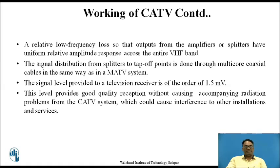The output of the tilt controller gives a relatively low frequency loss so that the output from the amplifiers or splitters has uniform relative amplitude response across the entire VHF band. The signal distribution from the splitter to tap-off points is done through multi-core coaxial cables, the same as in MATV systems. The signal level provided to a television receiver is on the order of 1.5 mV, whereas in MATV systems it is on the order of 1 mV. This level is used because it provides good quality reception without causing radiation problems or interference from other installations or services.